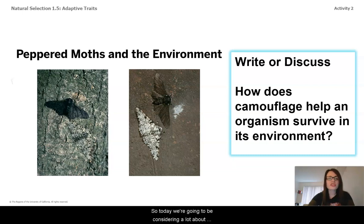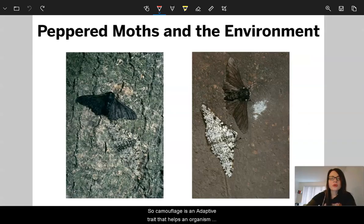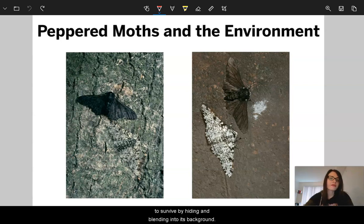Today we're going to be considering adaptive traits and the impact of environment. Let's first think about something called camouflage and how it can help an organism to survive in its environment. Camouflage is an adaptive trait that helps an organism survive by hiding and blending into its background.